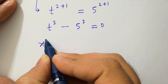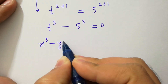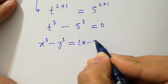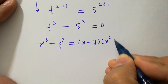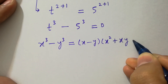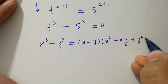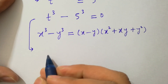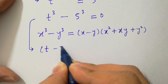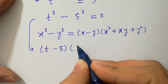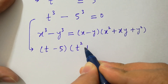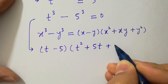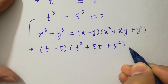By this we know the formula of x cubed minus y cubed, which is equal to x minus y times x squared plus xy plus y squared. Applying this, we have t minus 5 times t squared plus 5t plus 5 squared equal to 0.